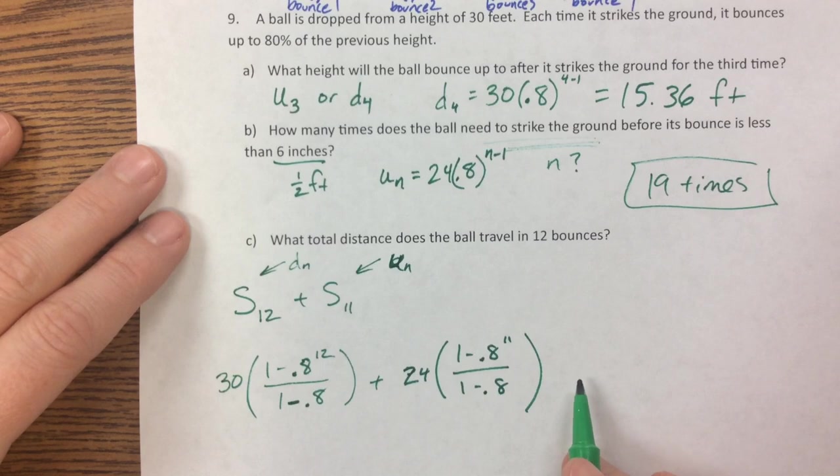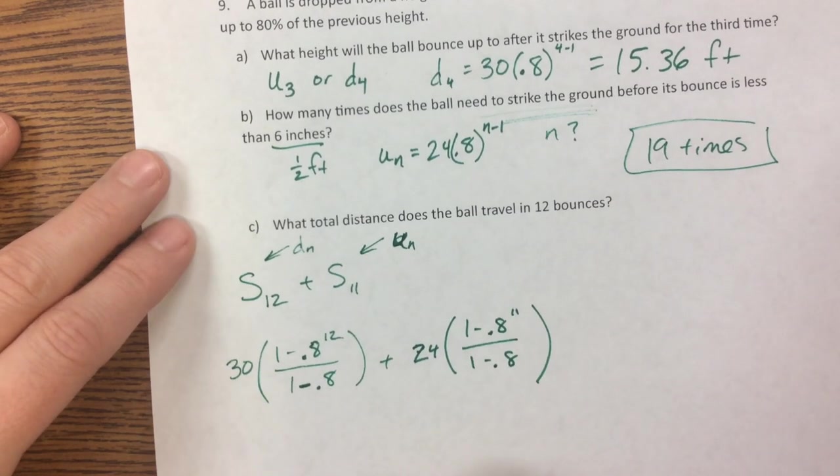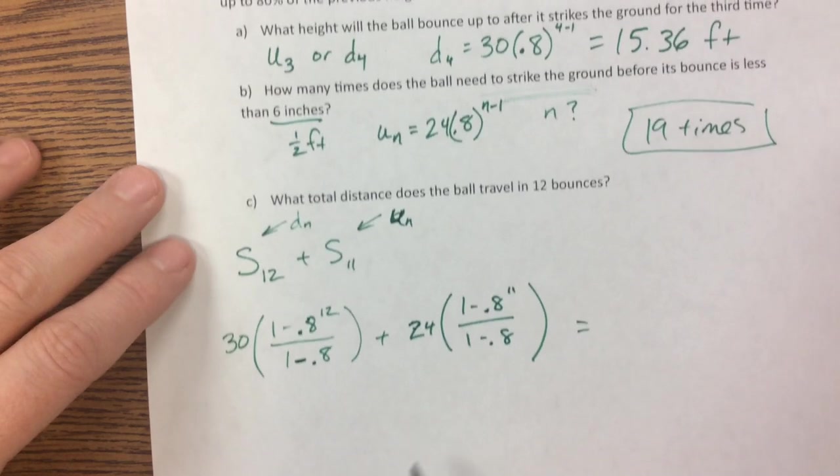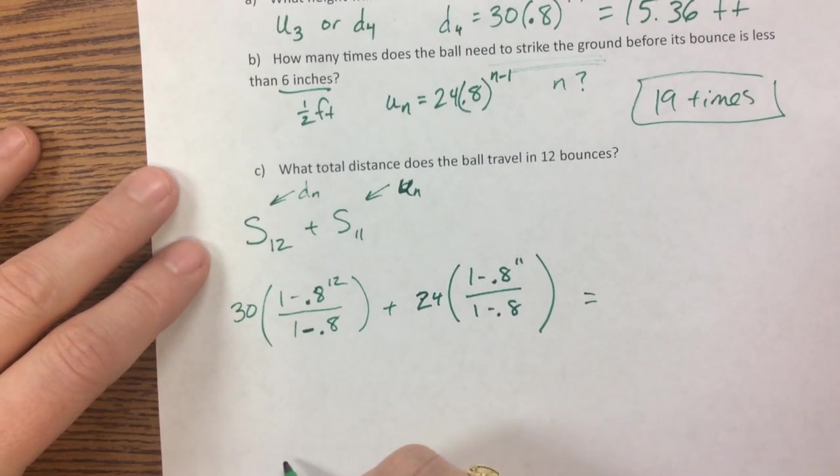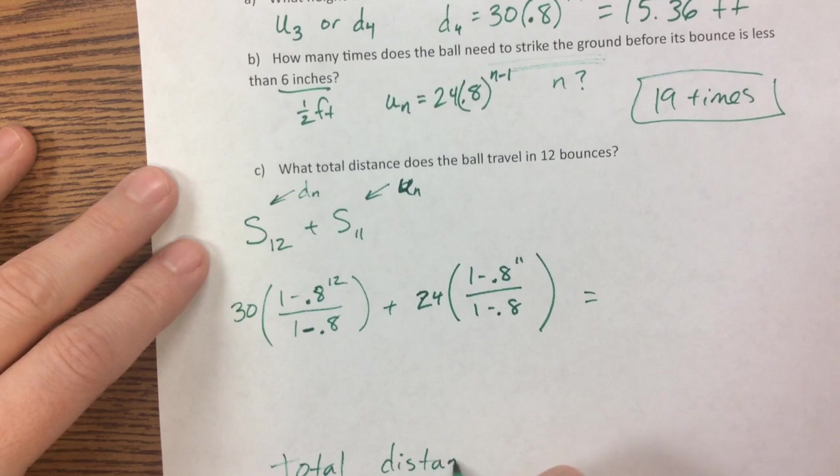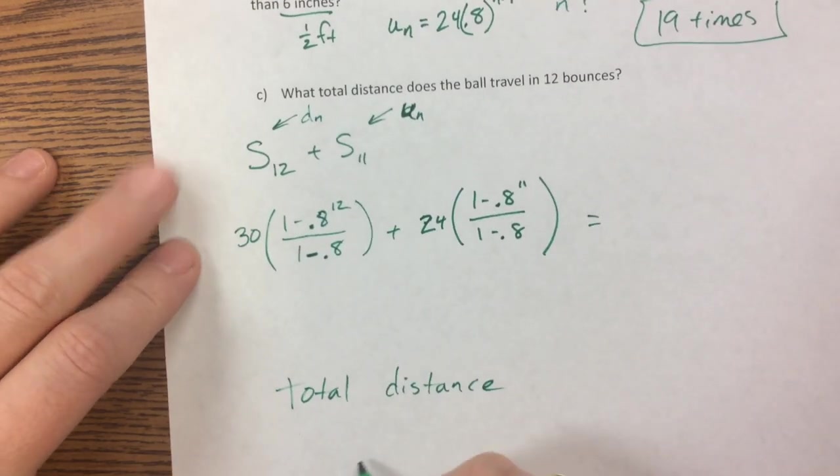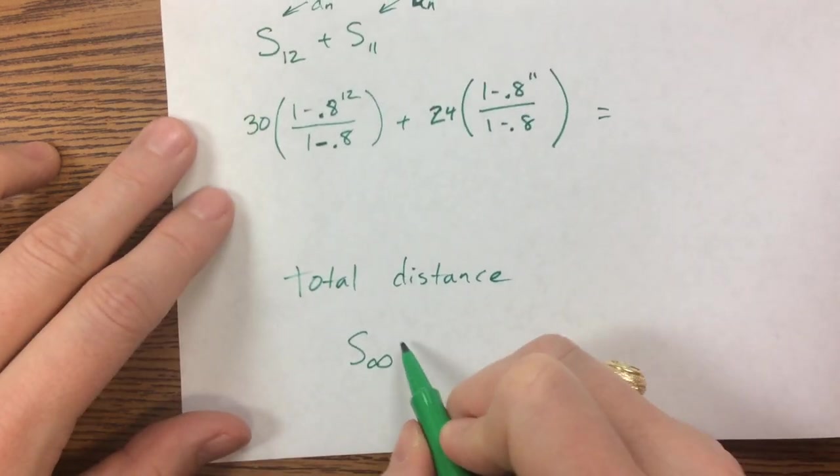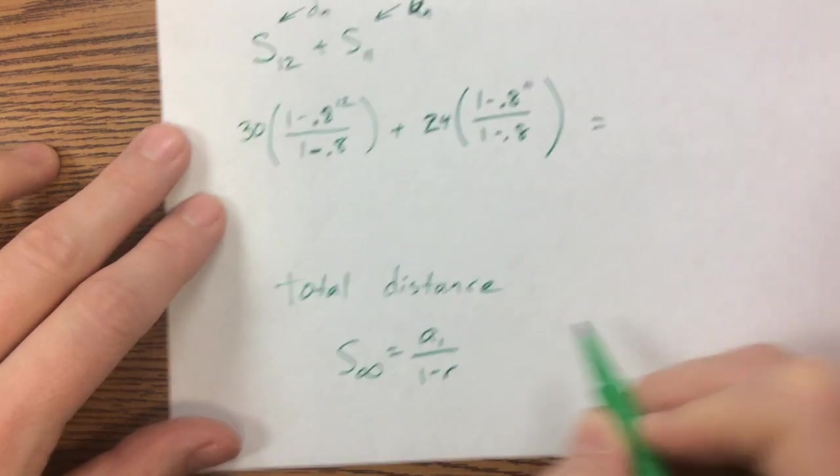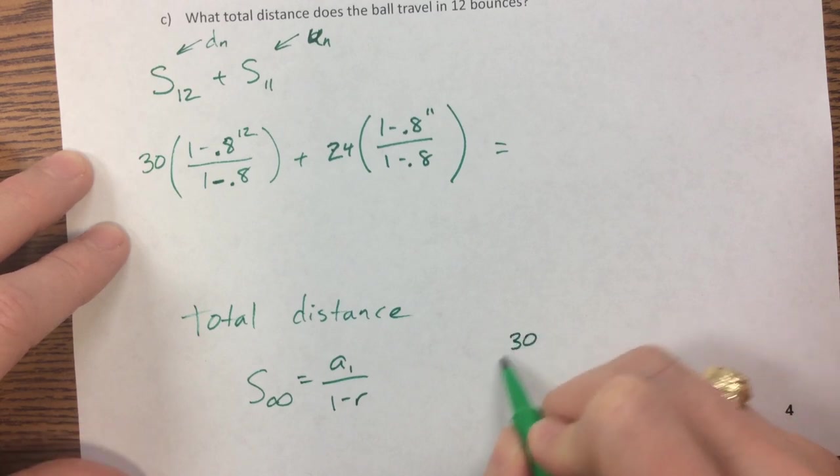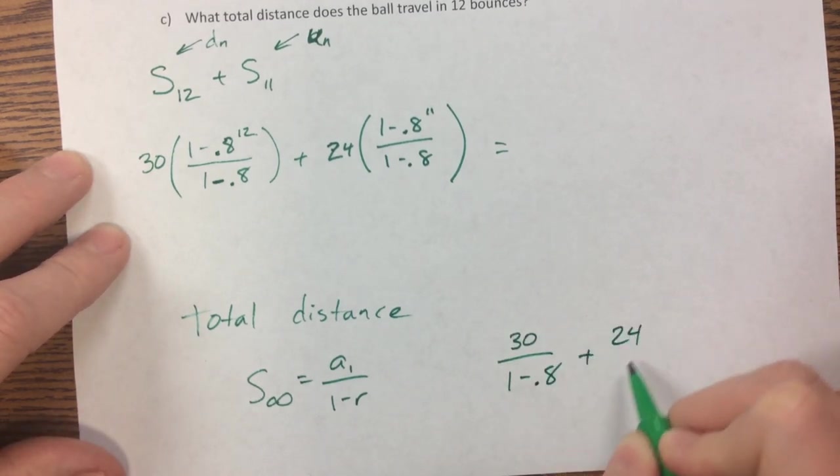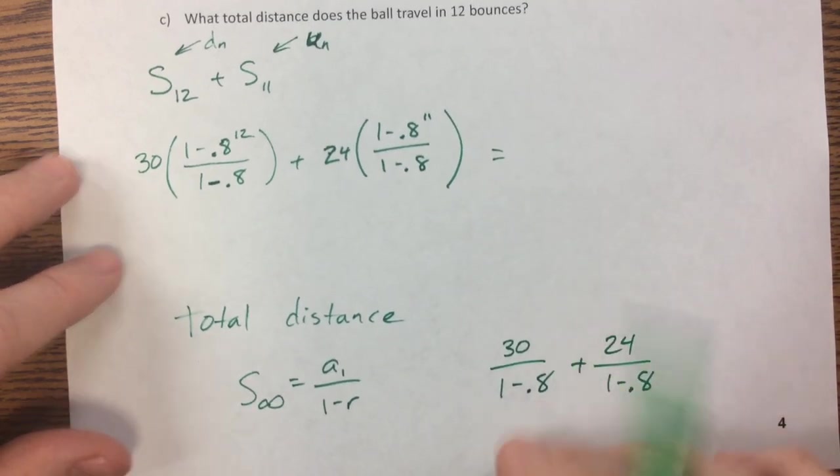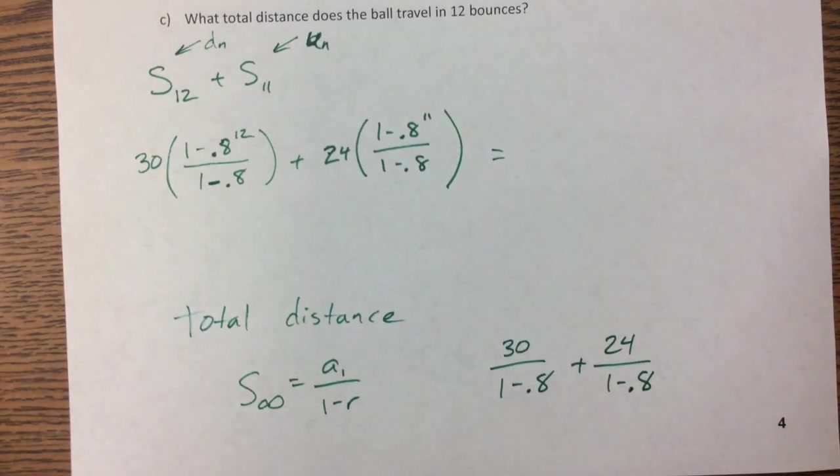Now if we want to find the total, if it says like I'll let you figure out that final answer or check my answer key. If it says the total distance and it doesn't say a bounce, then we need to use the sum of an infinite: a_1 over 1 minus r. So we would say 30 over 1 minus 0.8 plus 24 over 1 minus 0.8. So check my answer key for those last two.